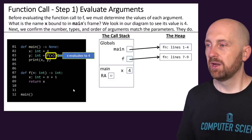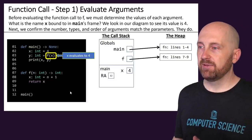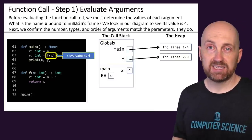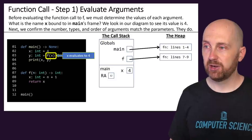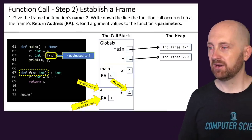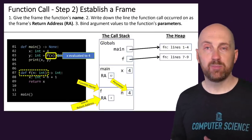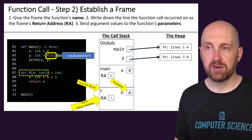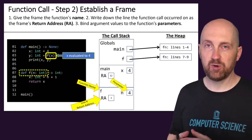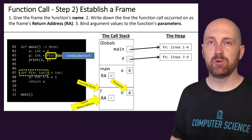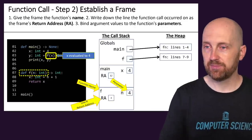We know that in f(x), x evaluated to 4 — we looked up the value of x and evaluated that argument. Now we have the important function call establishment step where we're going to establish a frame in order to process this function call.